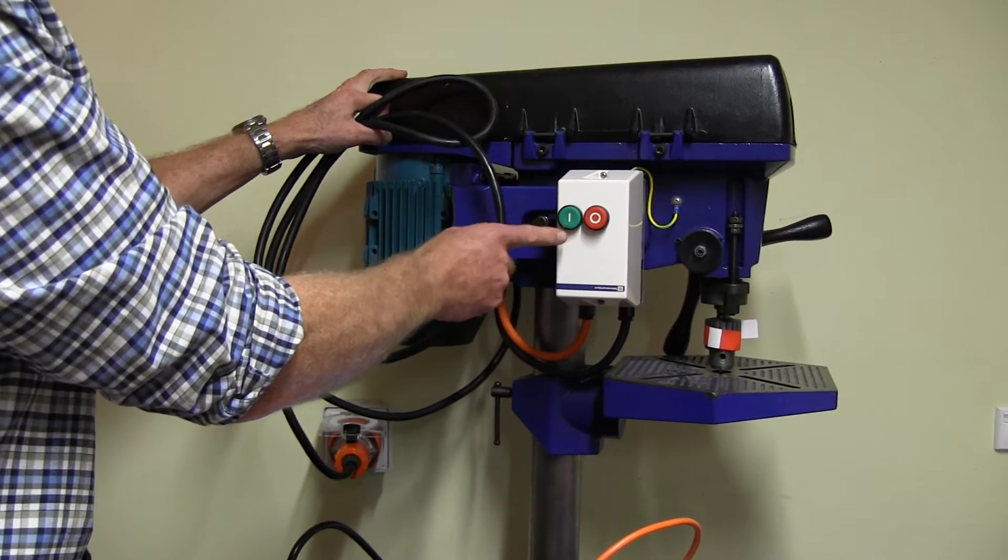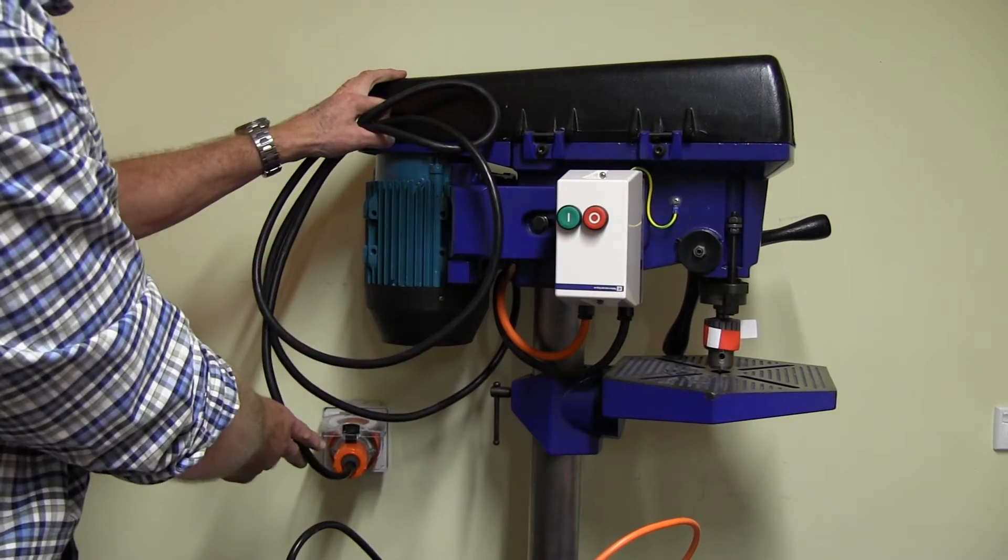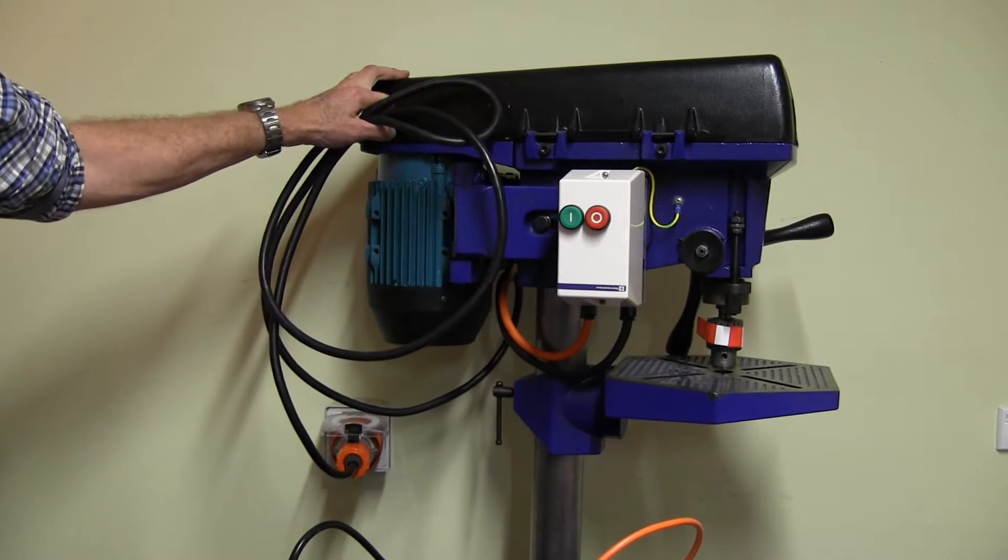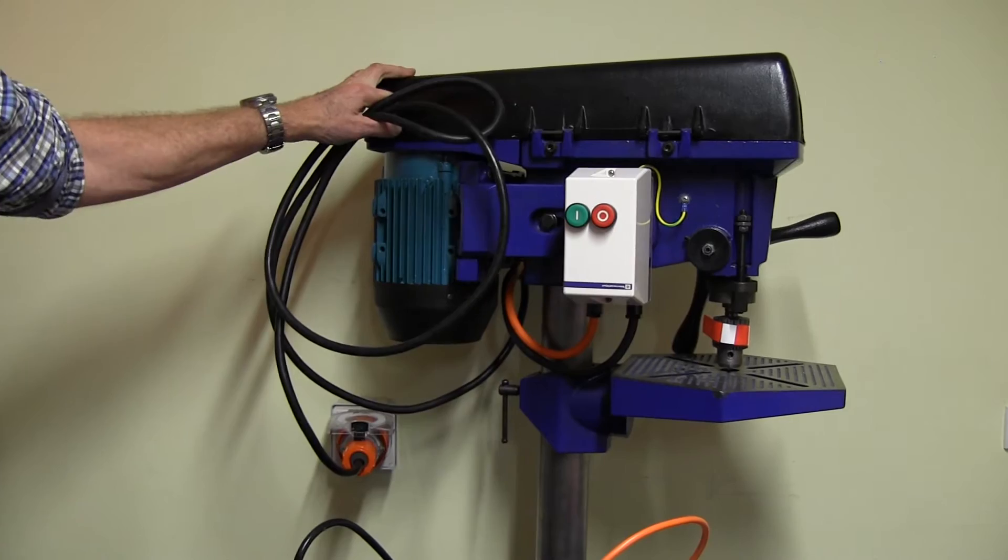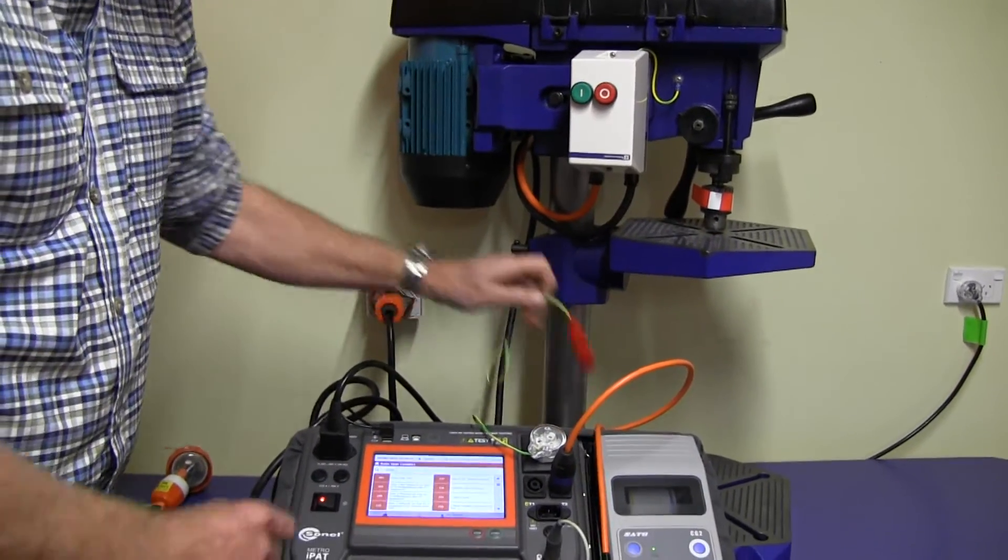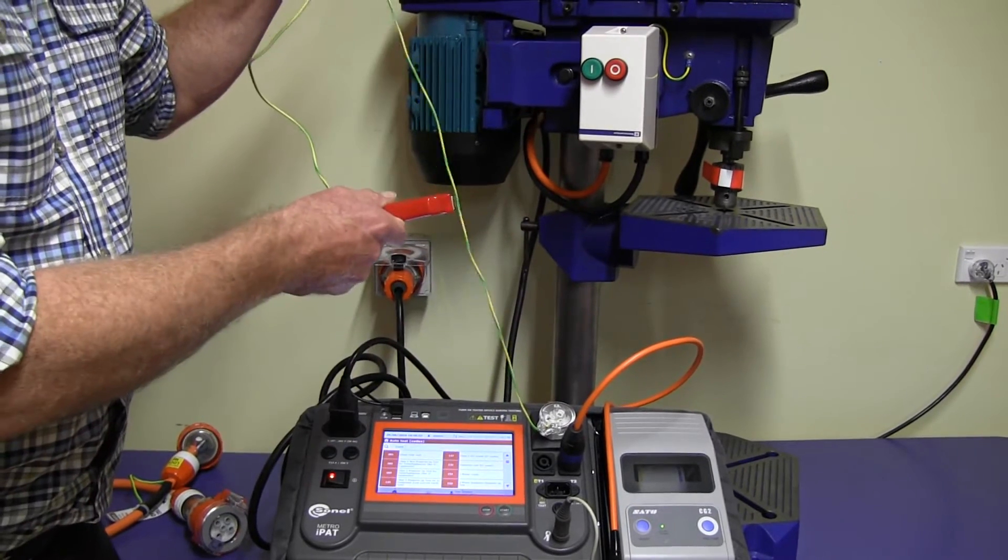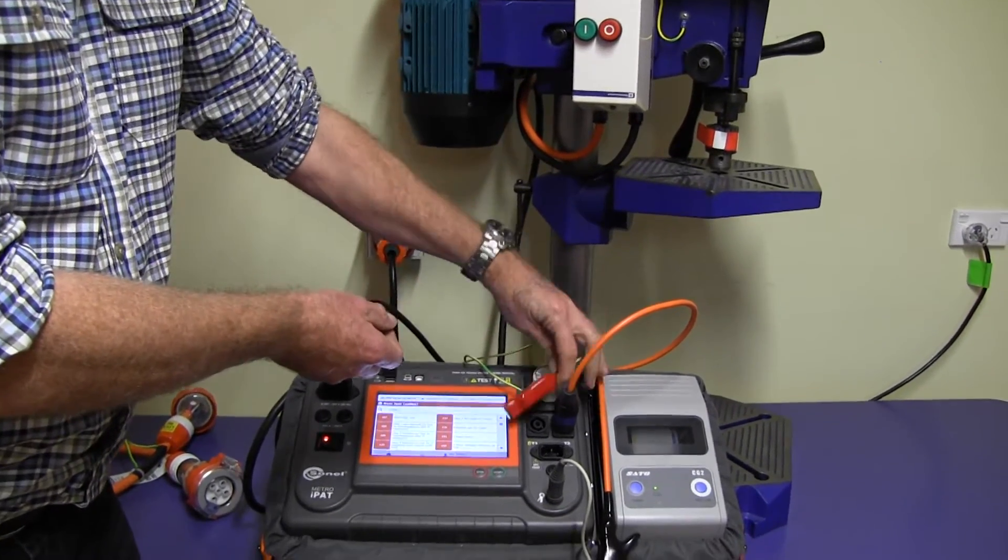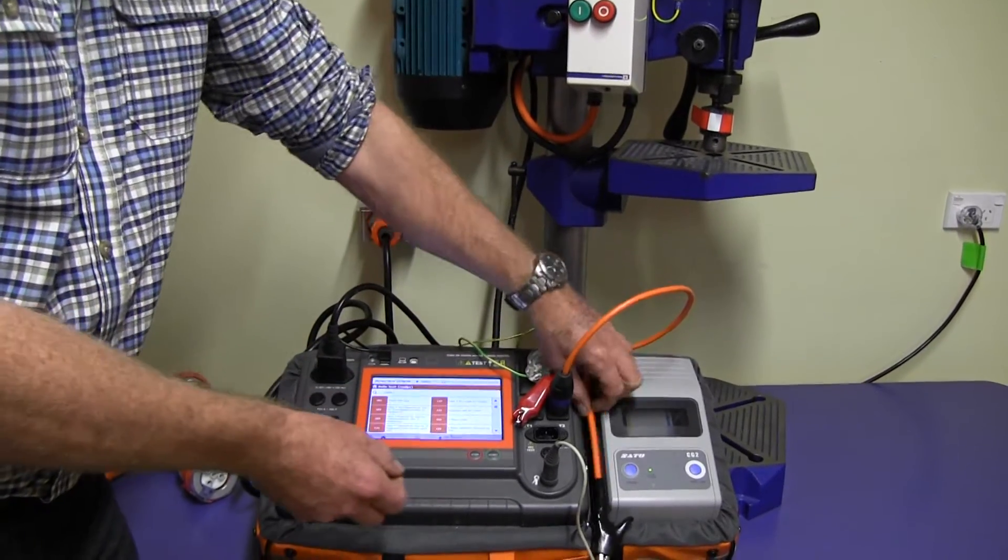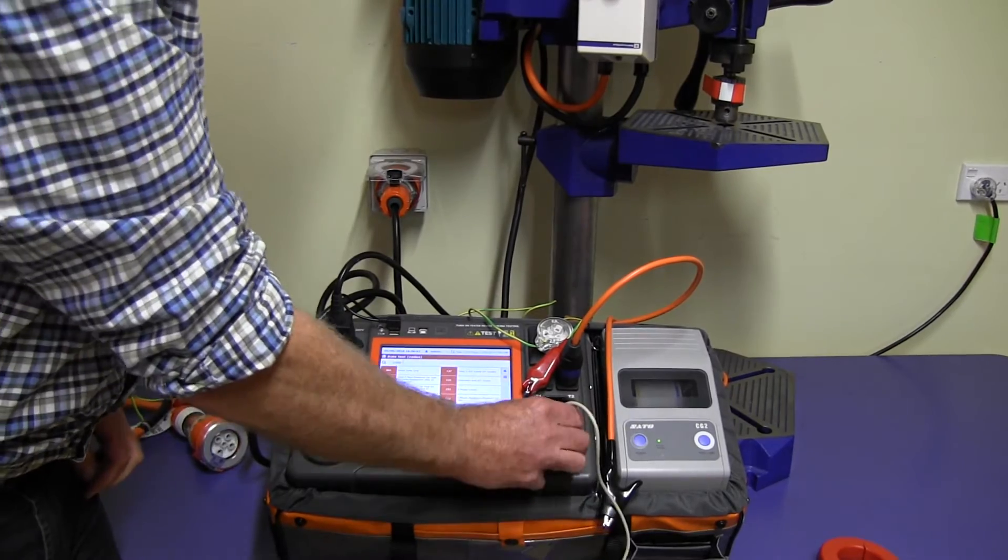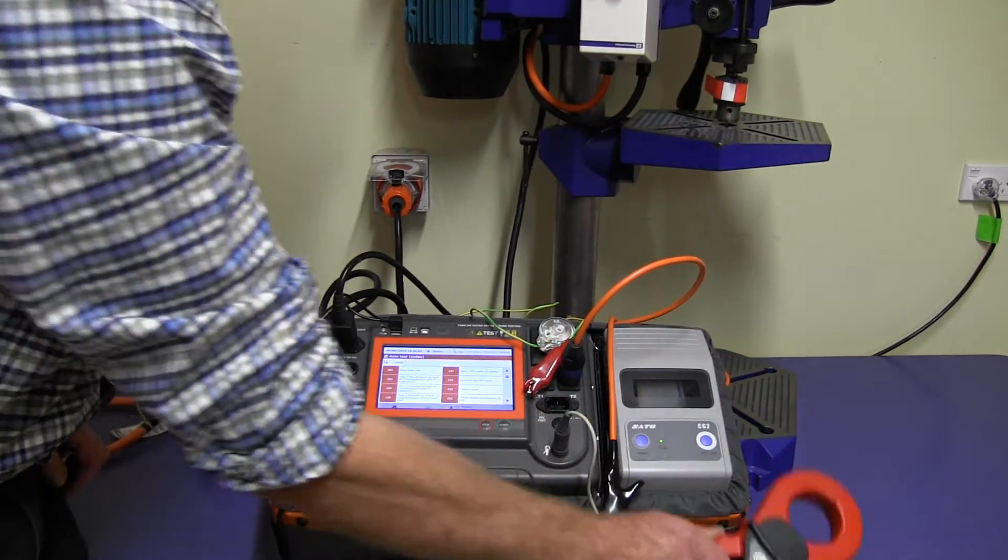I'm showing you the three-phase drill press operating through its normal supply. We're going to test this now. I've started to plug some things in. We've got the earth wire plugged in here, the wanda lead plugged into terminal 2, and the clamp plugged into the PAT tester.